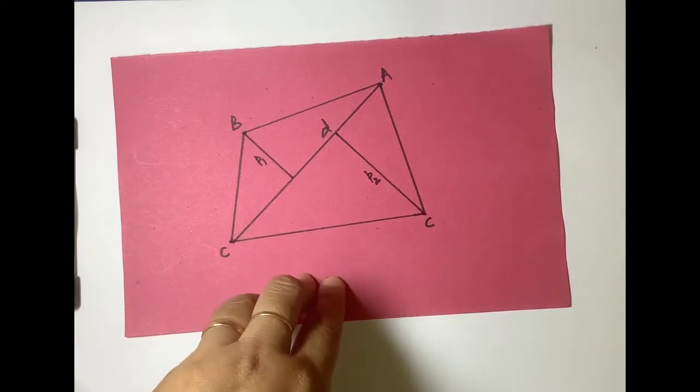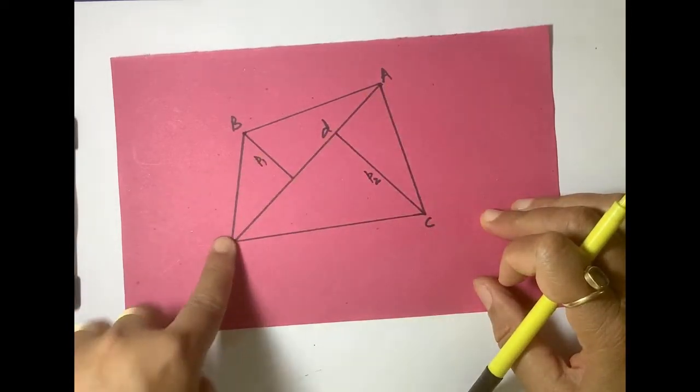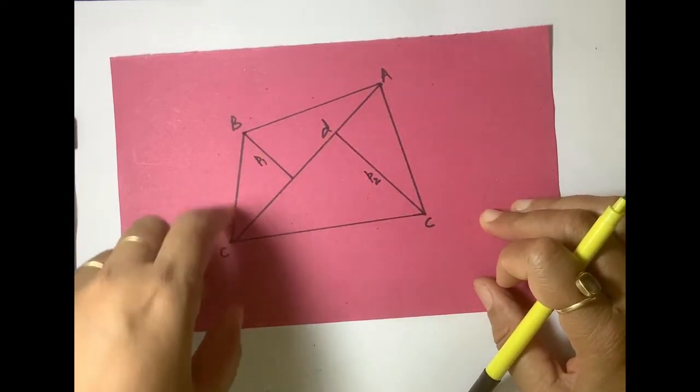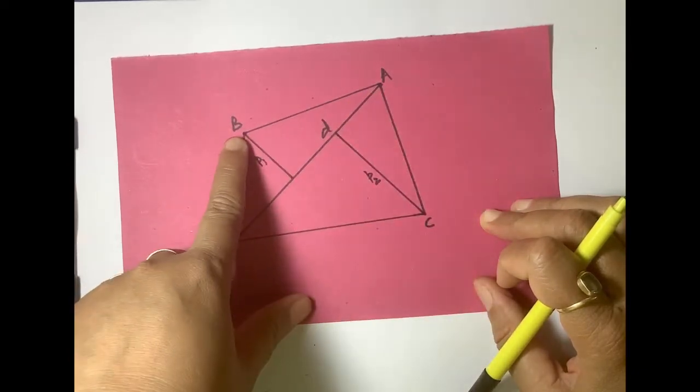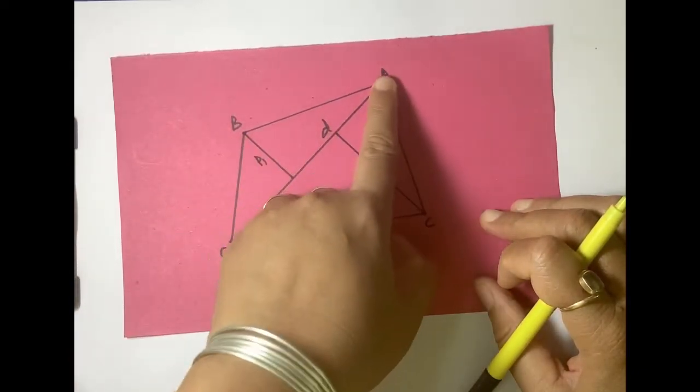What we see is that this diagonal is dividing this figure into two parts. One triangle and this is the second triangle.